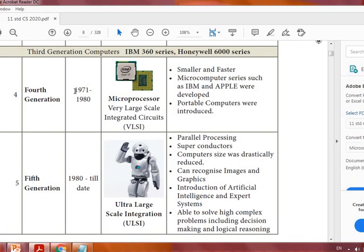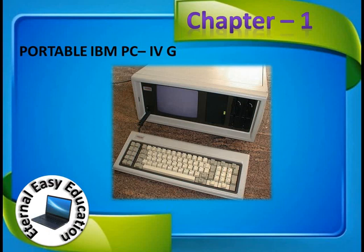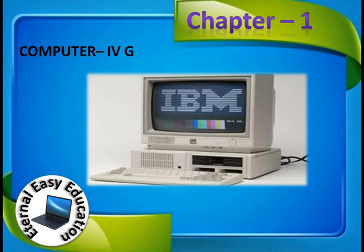In the fourth generation, the period is 1971 to 1980. The component used is the microprocessor, also called VLSI — Very Large Scale Integrated Circuit. Smaller and faster microcomputers, such as IBM and Apple, were developed, and portable computers were introduced. This is the IBM portable computer of the fourth generation period, and this is also a fourth generation computer.